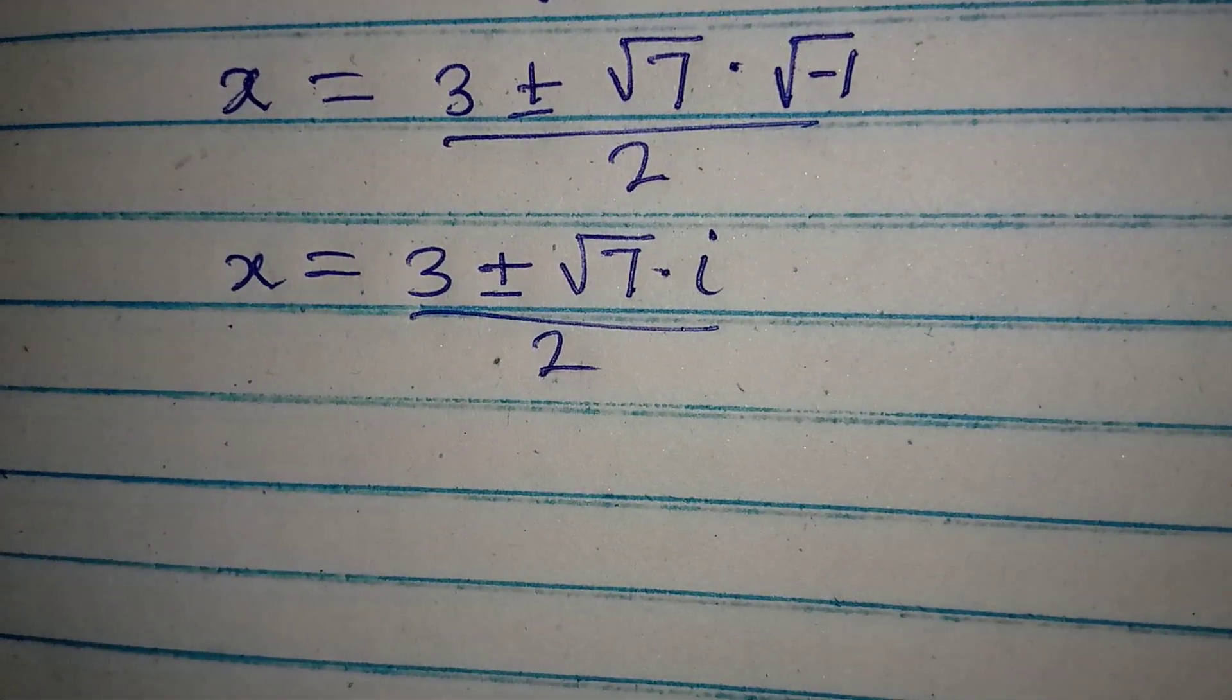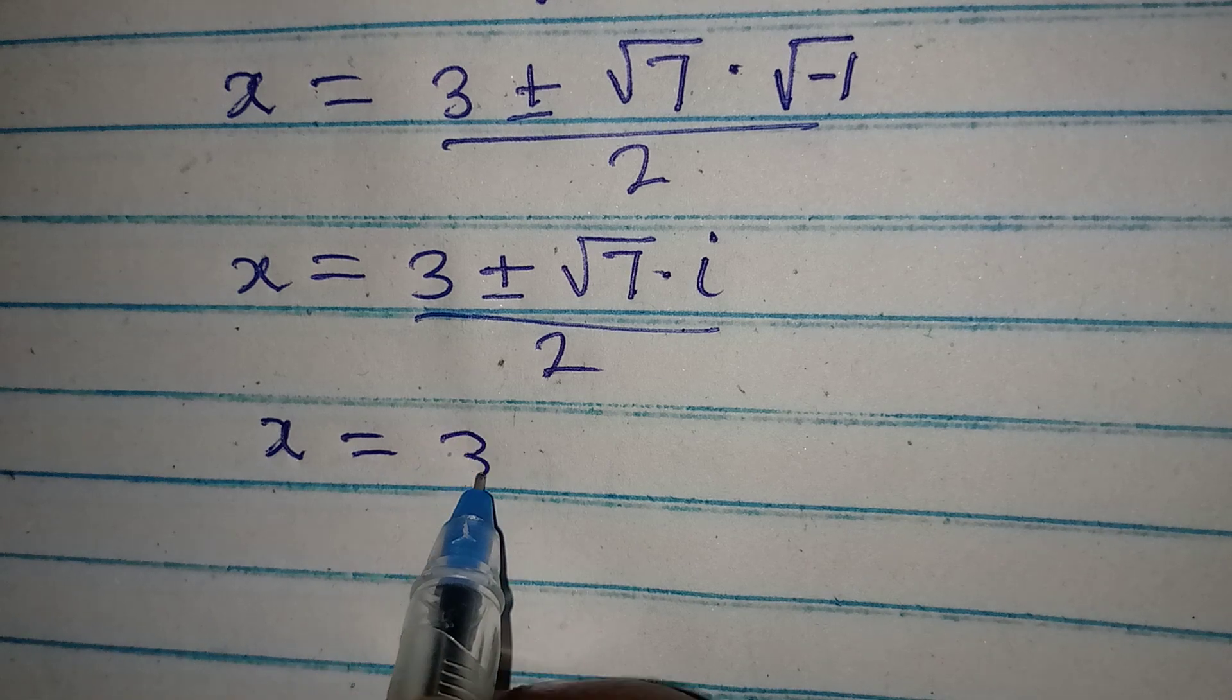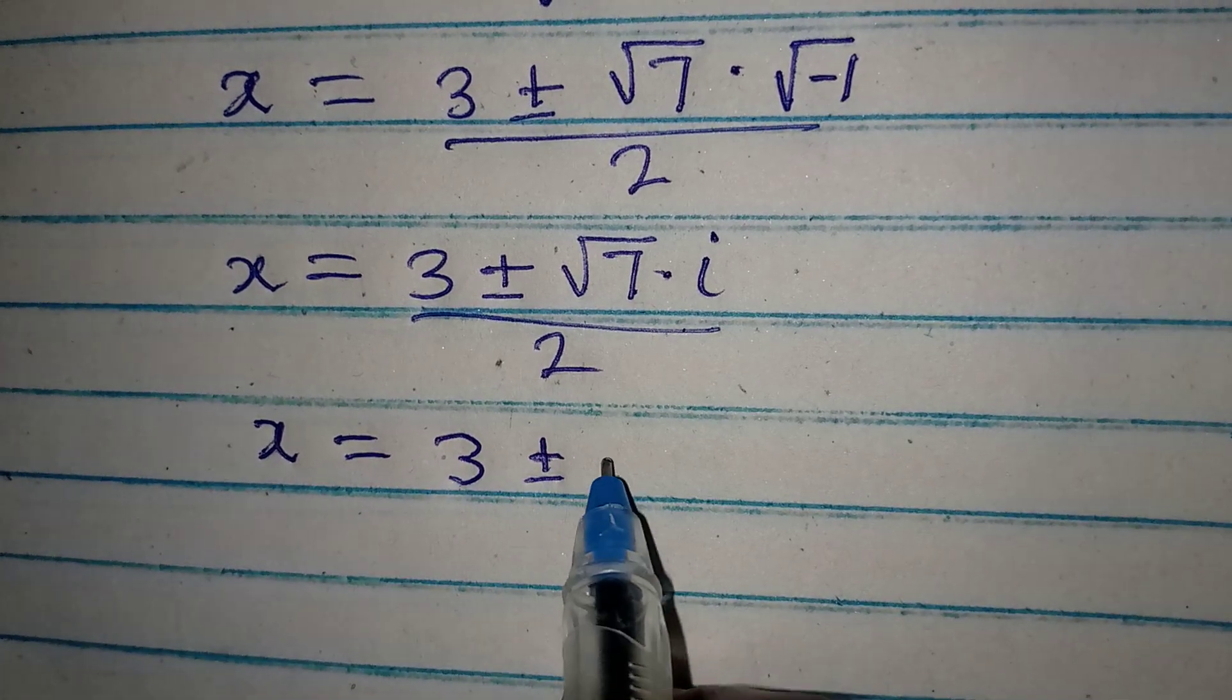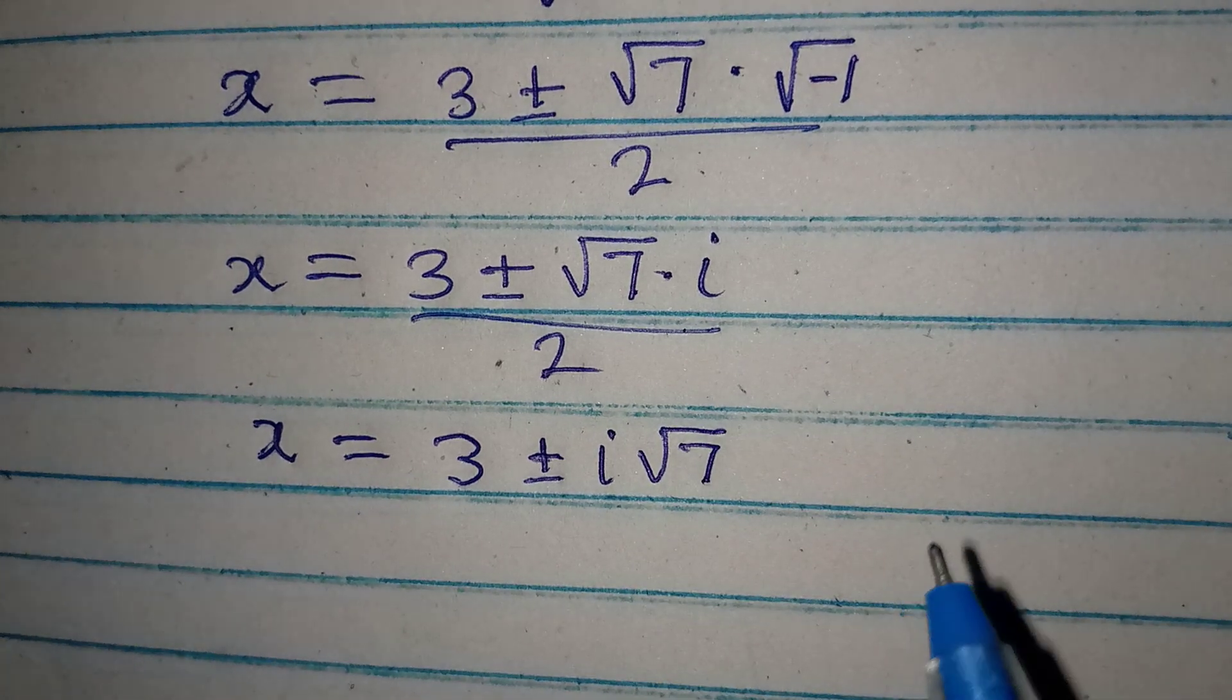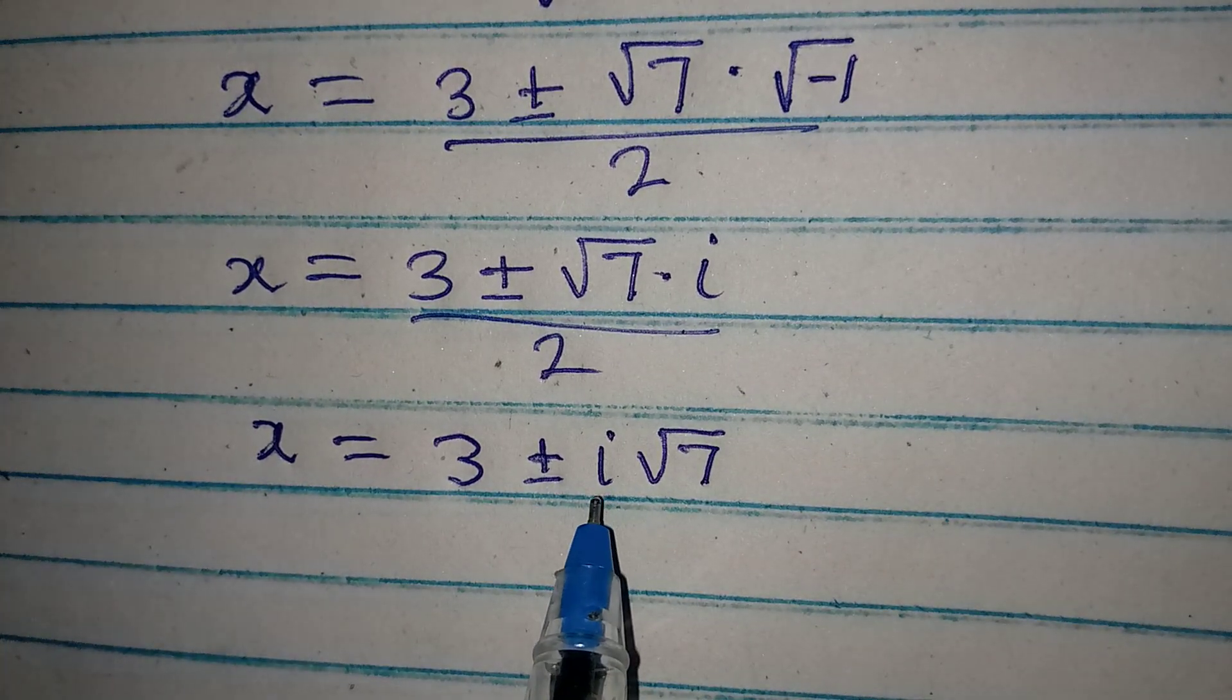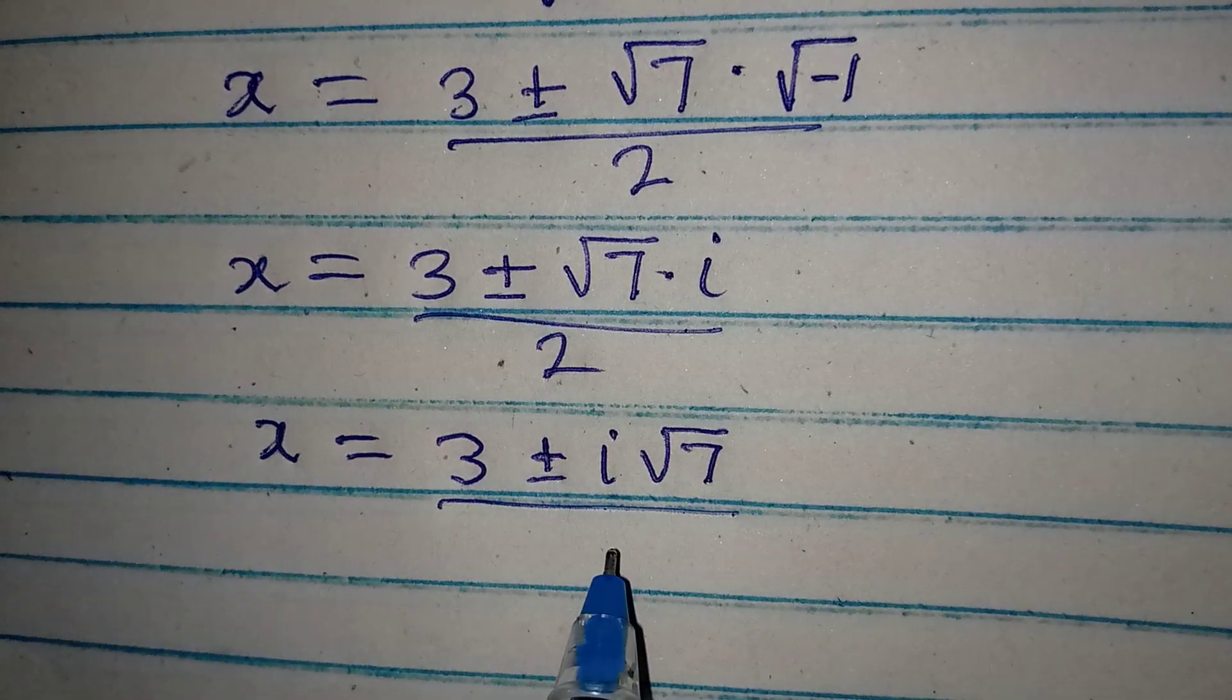To continue with this, we can say that our x is equal to 3 plus or minus i root 7. This way, you will know that this i is no longer under the square root sign. So, this is over 2.